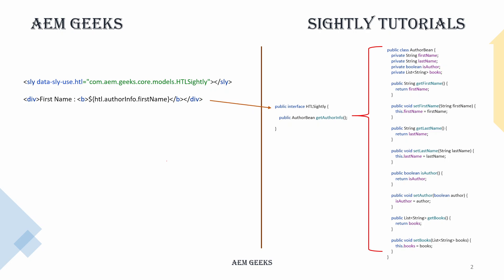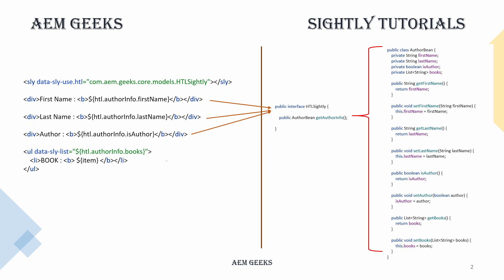It will call the method getAuthorBean, get the object of the author bean, and print the first name. Then when it prints last name, again it will go to that Sling model, call that method, get the object, and print it. The same way it prints the remaining two values. So to print all values, it is making four calls to the same method and getting the same object every time. Ideally, you can keep that object within the Sightly file and reuse it — that's where we use data-sly-set.